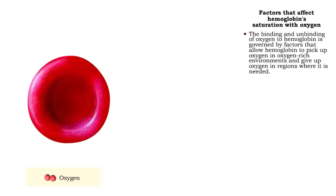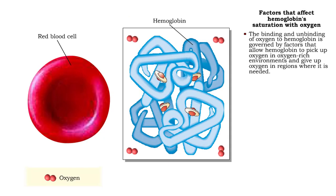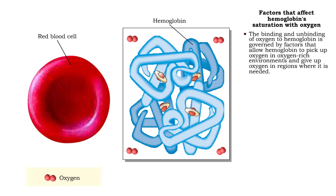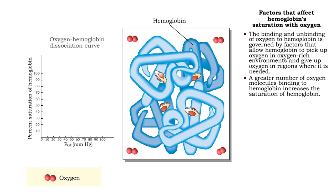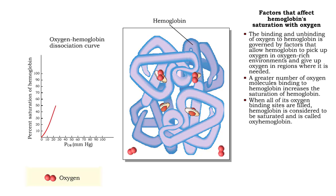The loading and unloading of oxygen to hemoglobin is governed by factors that allow hemoglobin to pick up oxygen in oxygen-rich environments and give up oxygen in regions where it is needed. The more oxygen molecules binding to hemoglobin, the higher its saturation. When all of its oxygen-binding sites are filled, hemoglobin is considered to be saturated and is called oxyhemoglobin.